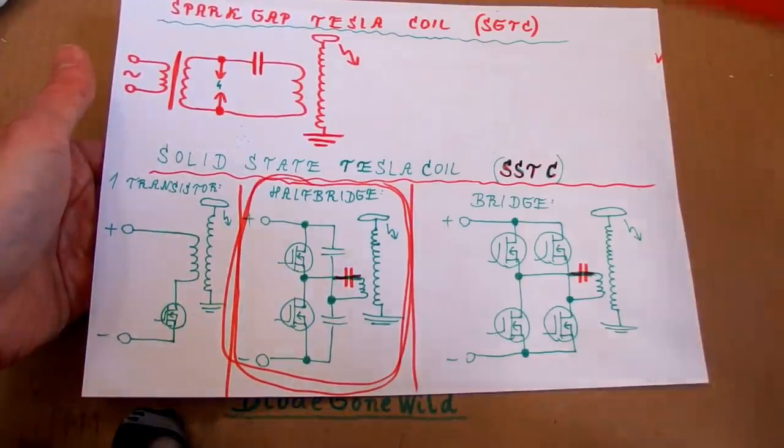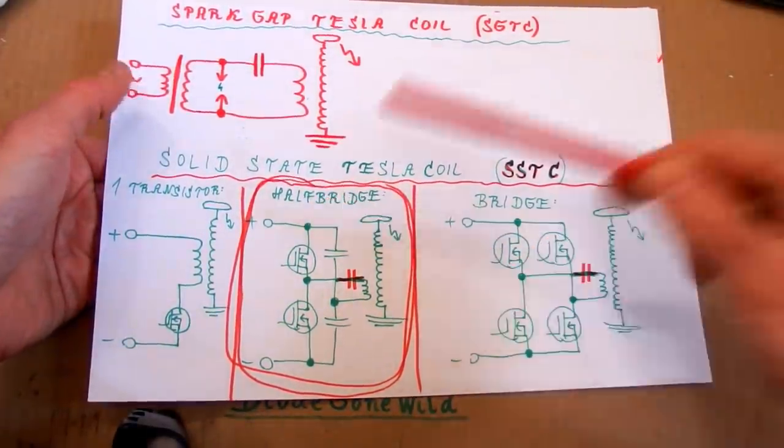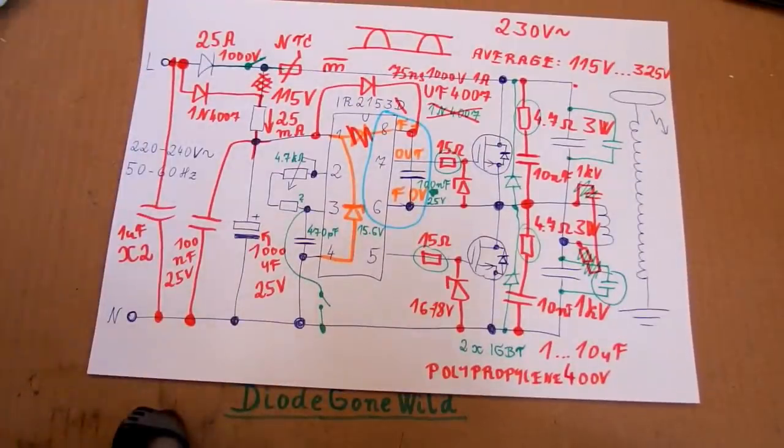So today let's make another episode of my solid state Tesla coil series. And today let's start building the circuit board, of course my unique way and with the shape of the heatsink in mind.